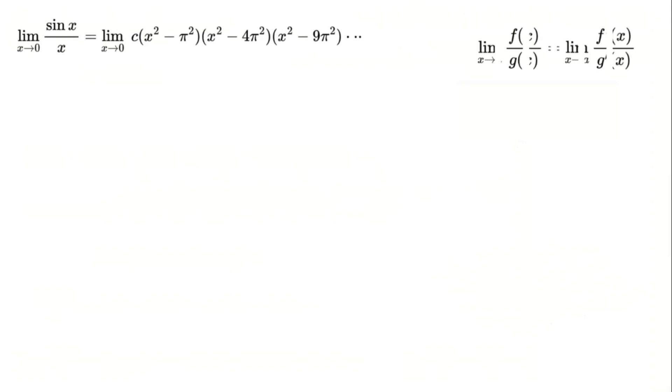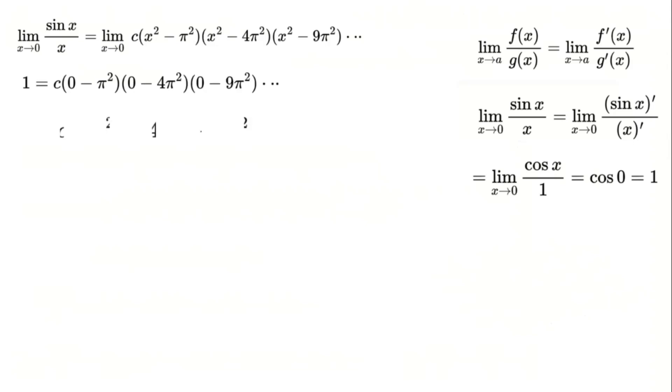Enter L'Hopital's rule, which allows us to compute limits by taking derivatives. The derivative of sine is cosine, and the derivative of x is 1. Substituting the limit as x approaches 0, we find that cosine of 0 is 1. This gives us the value of c.